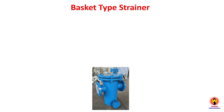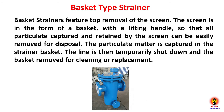Basket type strainer features top removal of the screen. The screen is in the front of the basket with a lifting handle, so that all particulate captured by the screen can be easily removed for disposal. The particulate matter is captured in the strainer basket; the line is then temporarily shut down and the basket removed for cleaning or replacement.